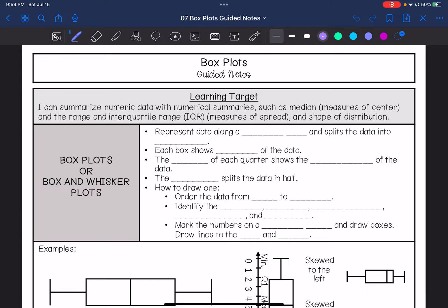So box plots, also known as box and whisker plots, represent data along a number line that splits the data into quartiles. Quartiles, as you may notice, kind of sounds like quarters. So that means it's splitting the data into four. Each box shows 25% of the data. The size of each quartile shows the distribution of the data.